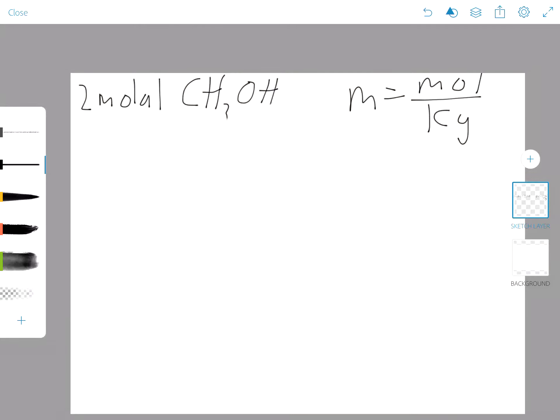This problem gives us a molality, so this is a very similar example problem. It says if we have two molal methanol, which is CH3OH, what is the mass percent, which is what it's asking for on the packet. So basically, we just have to assume since molality is moles over kilograms, we can just...